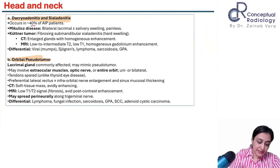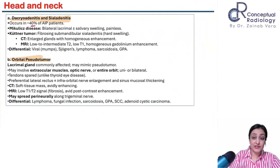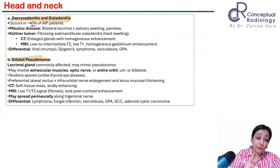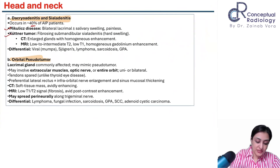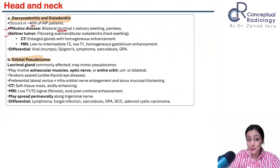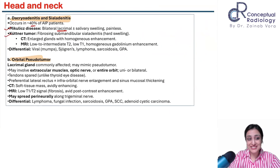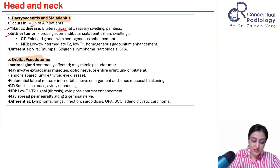40% of patients will have dacryoadenitis or sialadenitis. Two buzzwords to remember: Mikulicz's disease — lacrimal gland swelling previously called Mikulicz's disease — and Kuttner's tumors, which are parotid enlargement. These show low T2, low T1 signal with enhancement.